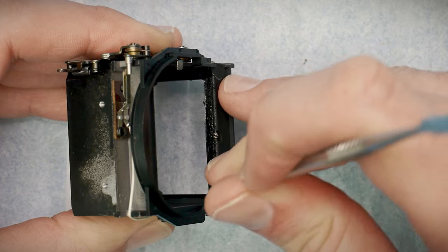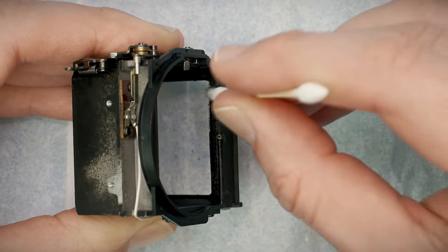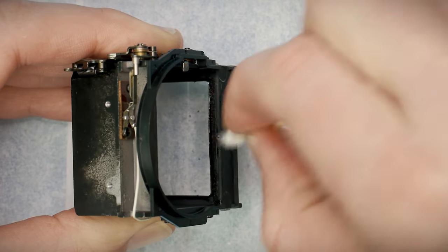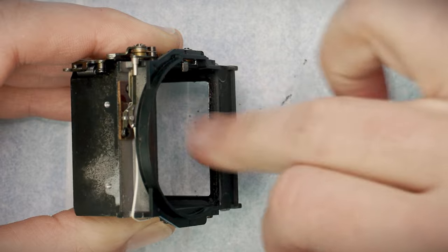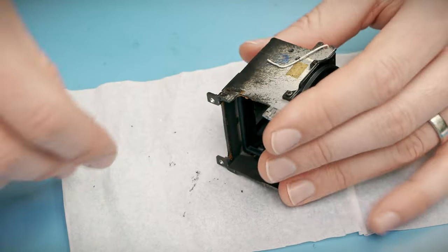This one feels pretty resistant to my scraper, unfortunately. Eventually I'm able to scrape off the foamy part, but I couldn't get the original adhesive backing to budge. It's still on there. I think it's okay, it shouldn't affect the new foam that I'll put on later, but it is a little annoying.